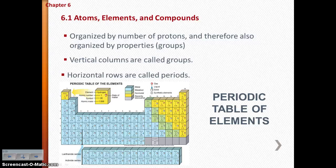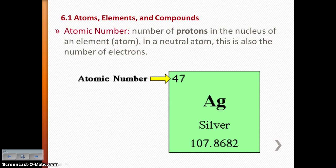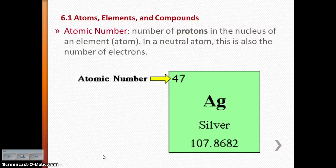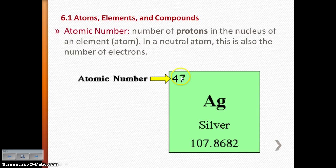By organizing the periodic table by protons, you're also organizing it by properties, which is why solids, liquids, metalloids, and nonmetals each appear in general areas. Looking at a specific element's grid on the periodic table, you can determine the atomic number — for example, 47 for silver (Ag). The atomic number gives us the number of protons in the nucleus, and in a neutral atom it also tells us the number of electrons, since protons and electrons are equal.